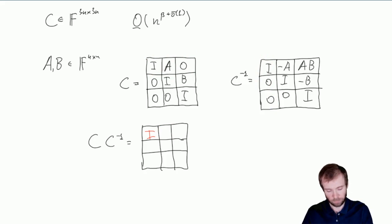Here we would have identity times minus A plus A times identity plus 0 times 0, and this gives us an all 0 matrix. Here we would have identity times AB plus A times minus B plus 0 times identity, and this would give us all 0 blocks as well. And so on and so forth.